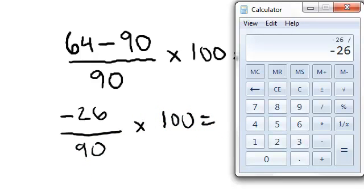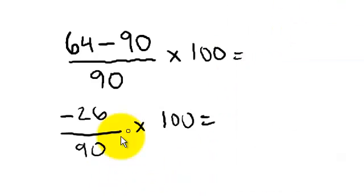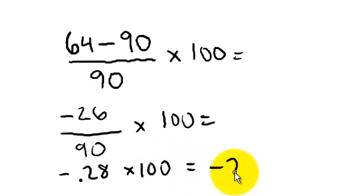Alright, so we take our negative 26 and divide that by 90 is negative 0.28. We're just going to write that negative 0.28 times 100 equals